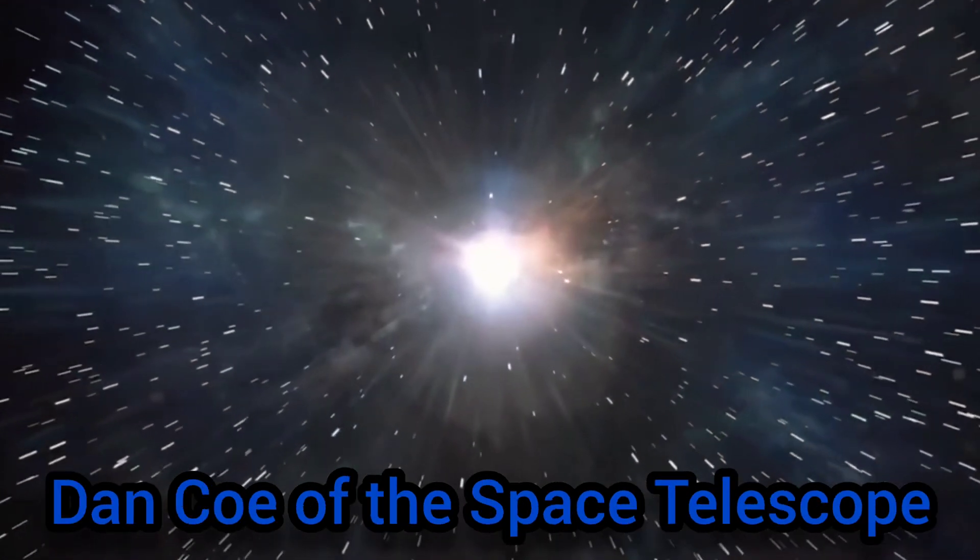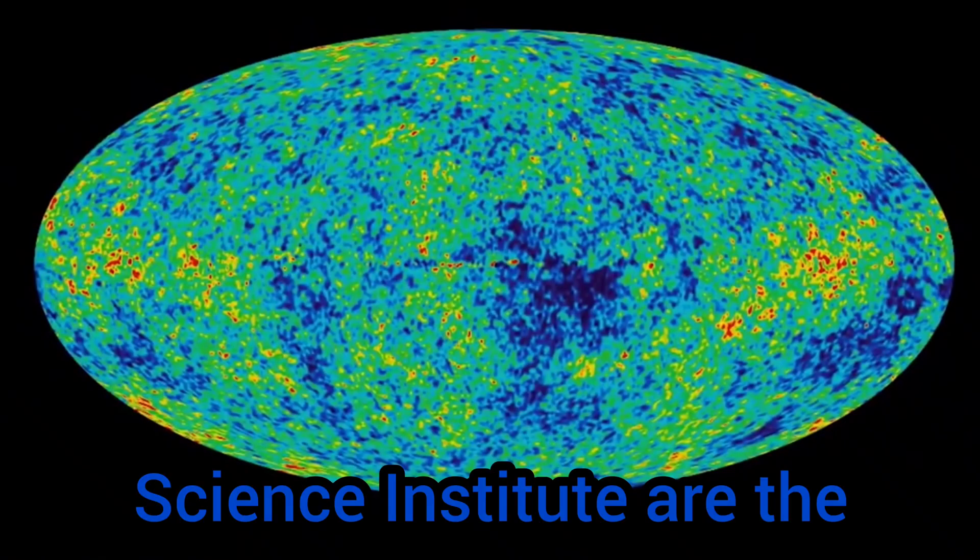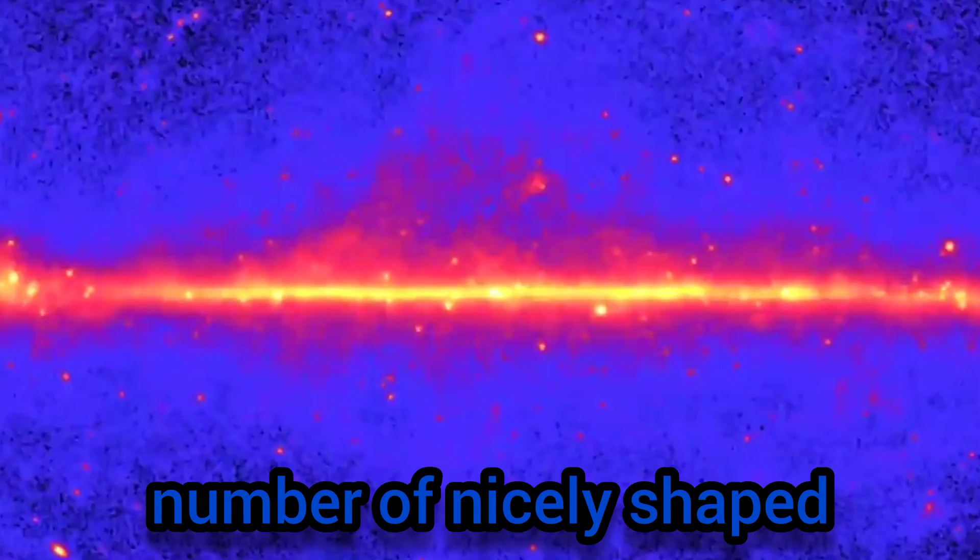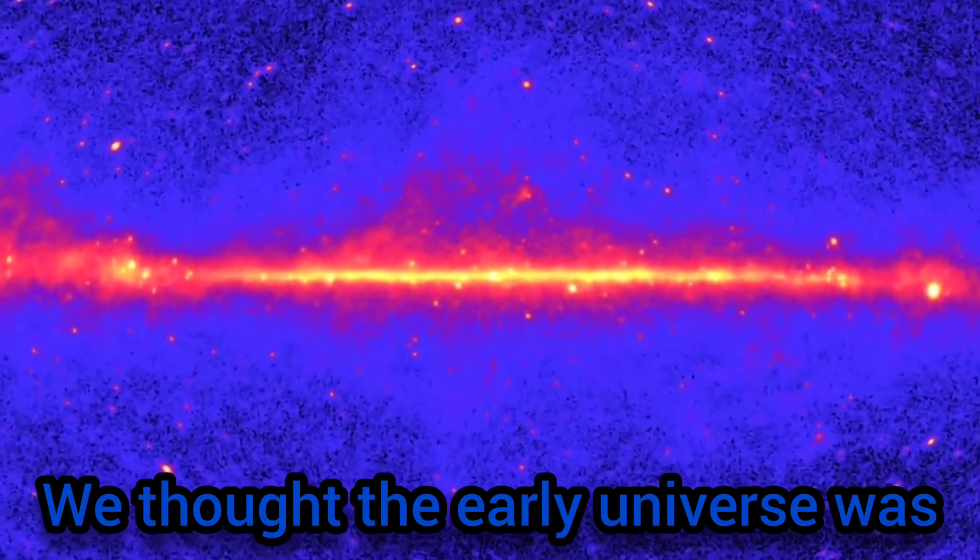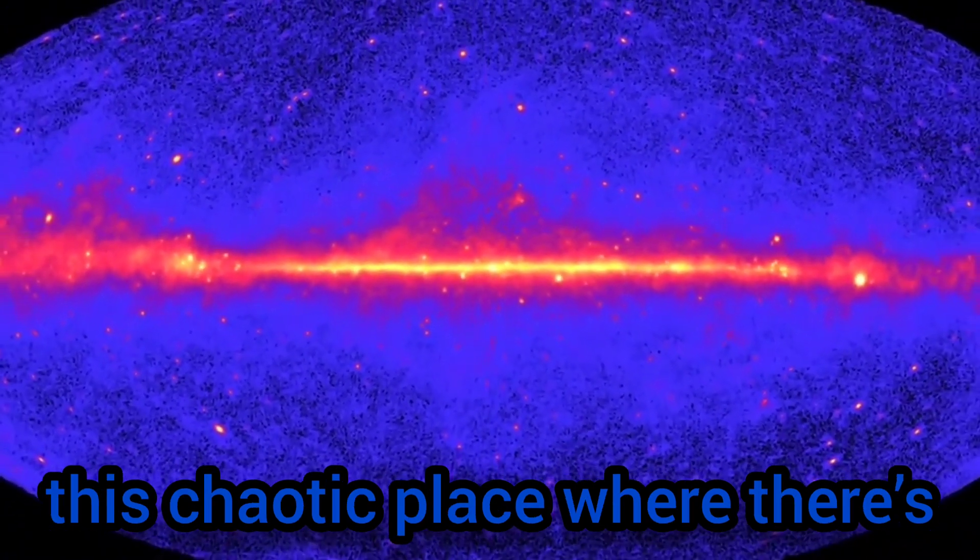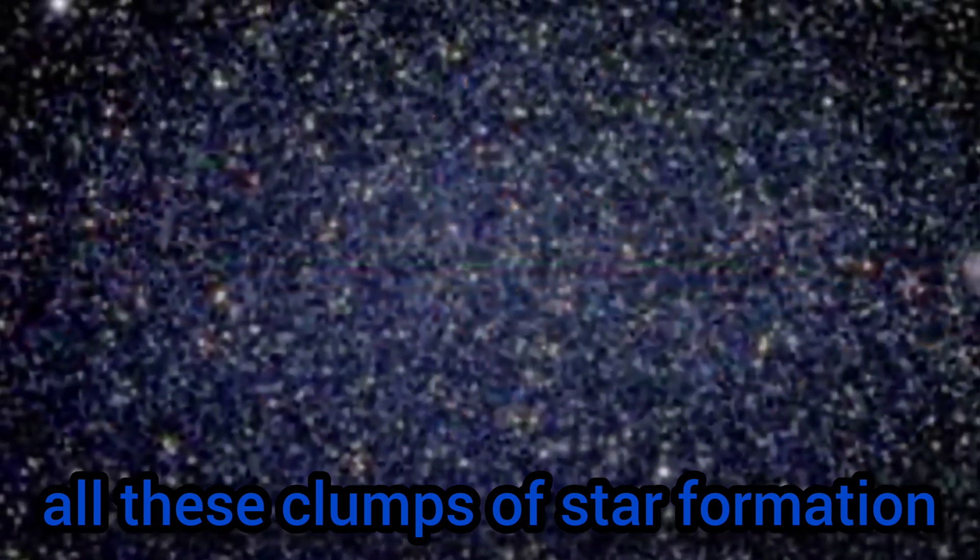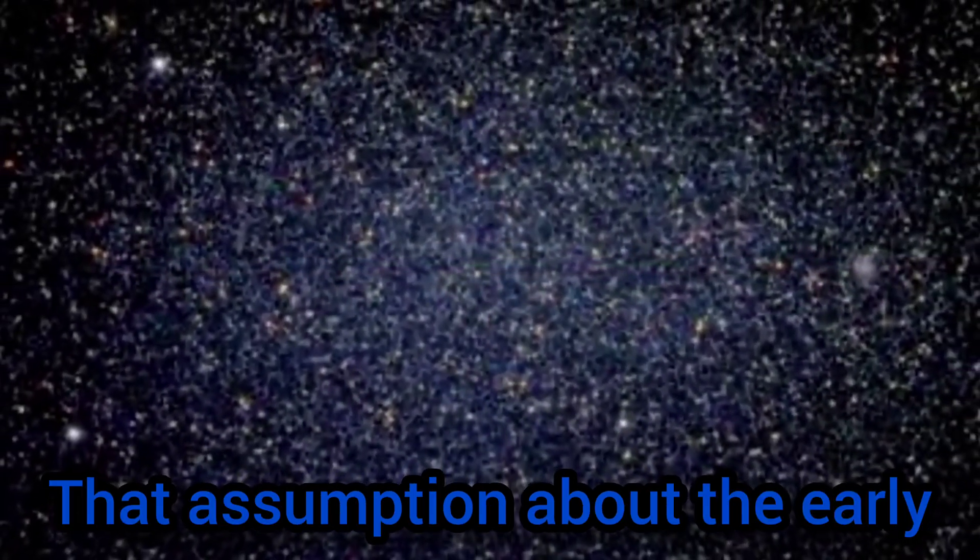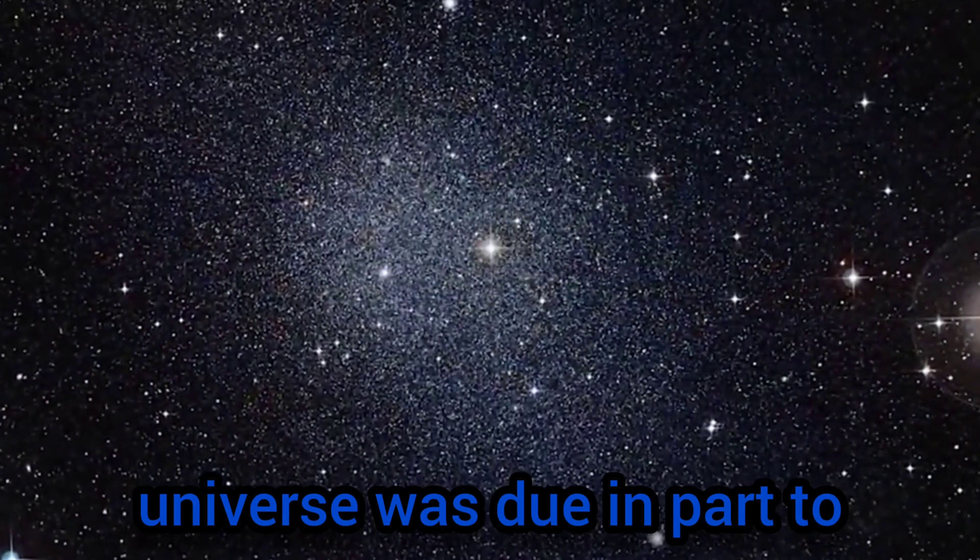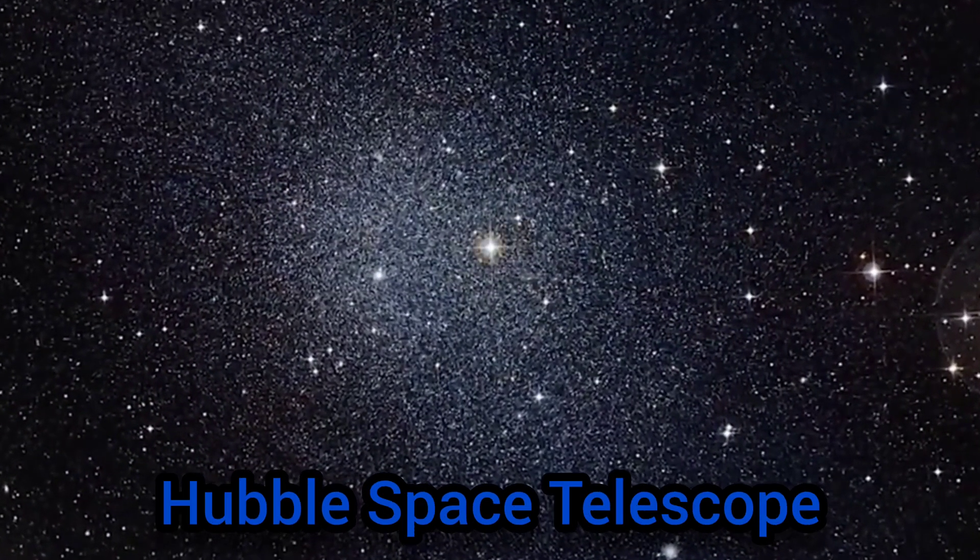What has surprised astronomer Dan Coe of the Space Telescope Science Institute are the number of nicely shaped disc-like galaxies. We thought the early universe was this chaotic place where there's all these clumps of star formation and things are all a jumble. That assumption about the early universe was due in part to observations by the Hubble Space Telescope.